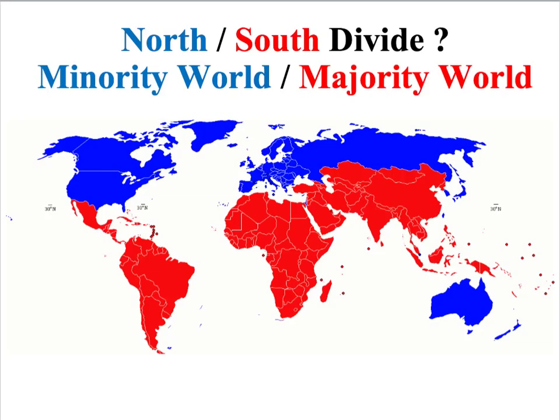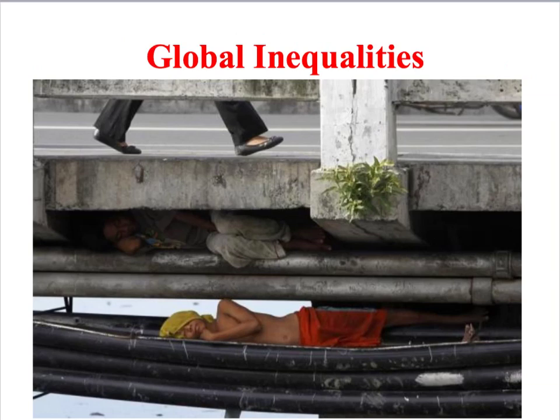Poorer countries tend to be much more concentrated in the south — in Central and Southern America, Africa, and parts of Asia. We also use the term the majority world to describe these countries because about 80% of the world's population live in these less economically developed countries. We should also bear in mind that there are often big inequalities within countries, even in very rich countries like America.